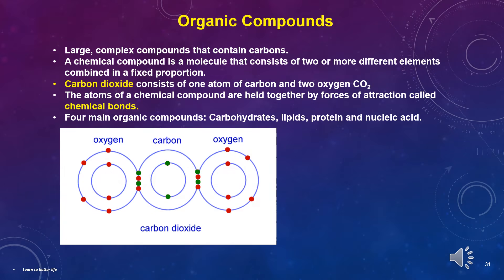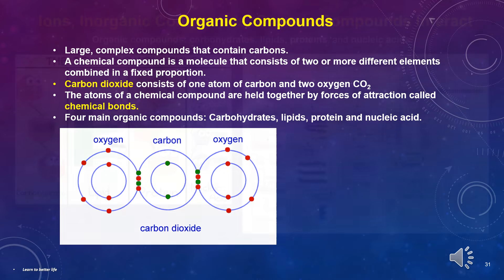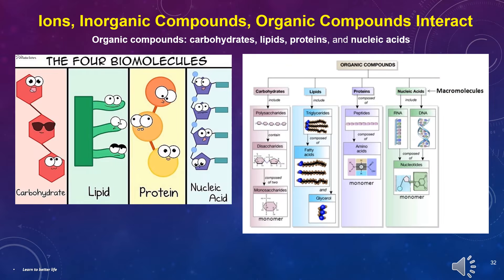Organic compounds are large, complex compounds that contain carbon. A chemical compound is a molecule that consists of two or more different elements combined in a fixed proportion. For example, carbon dioxide consists of one atom of carbon and two oxygen atoms (CO2). The atoms of a chemical compound are held together by forces of attraction called chemical bonds. The organic compounds we will learn in this class are carbohydrates, lipids, proteins, and nucleic acids.